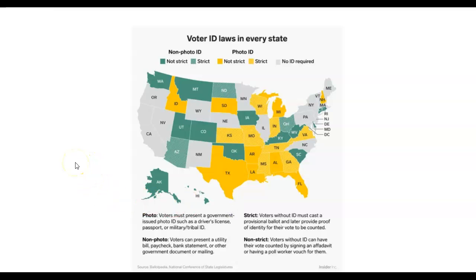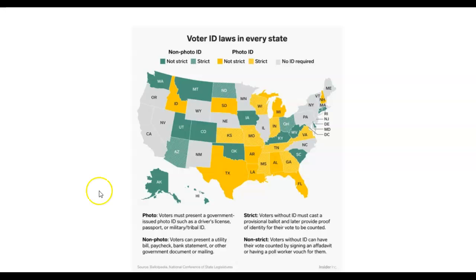Here are the voter ID laws in every state. A non-photo ID means your vote can be counted, but you have to sign a sworn statement or have someone who works at the polls vouch for you. Some states have photo ID requirements — many of these are states in the South and Midwest — where you have to present a government-issued photo identification so the person voting matches the person on the registration rolls. And there are many states that don't have any of these types of voter ID laws. So: non-photo ID, photo ID, and no ID required.